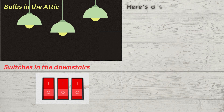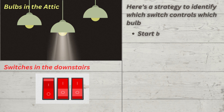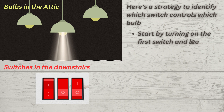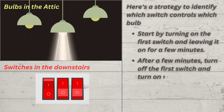Here's a strategy to identify which switch controls which bulb. Start by turning on the first switch and leaving it on for a few minutes. After a few minutes, turn off the first switch and turn on the second switch.